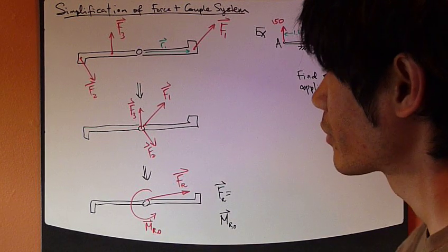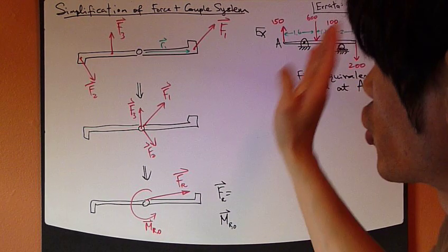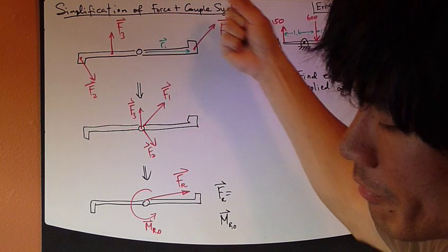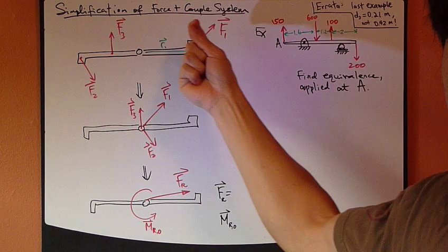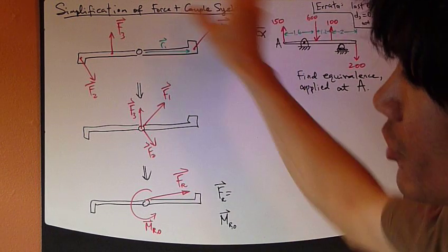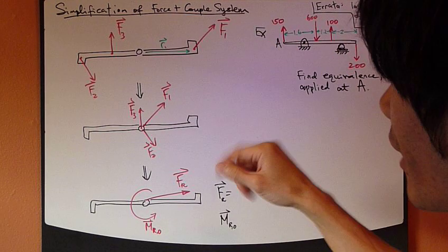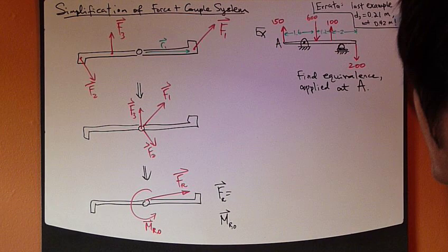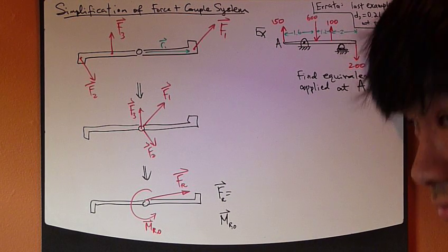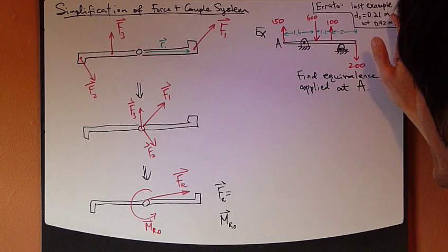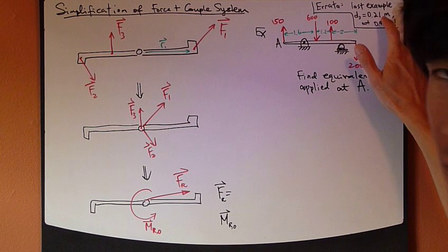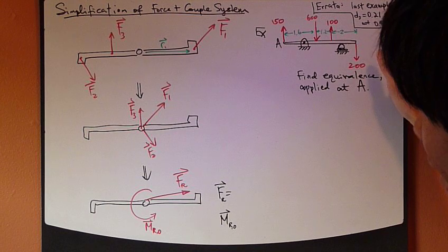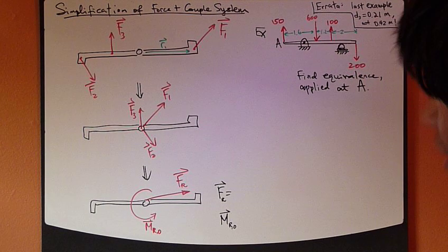Last time we talked about how we can shift a force by adding couple moments to the system to make them equivalent. In the example last time, just a quick correction: D3, the way you actually went through the calculations, you would have found that it's 0.21 meters and not 0.42, so just make a quick correction.